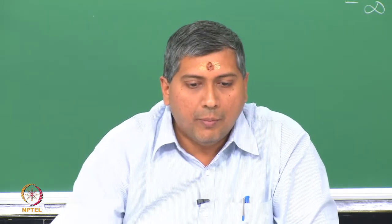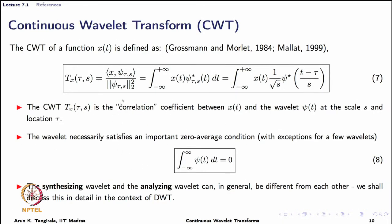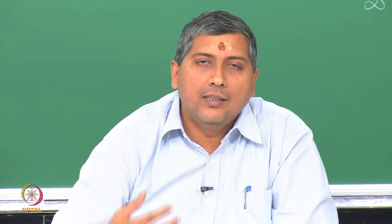To summarize: starting from the Fourier synthesis equation, we have arrived at the synthesis equation for the signal in terms of the wavelet transform T subscript x, which is a function of tau and s. Compare this with the short time Fourier transform which was a function of tau and frequency omega — now it is a function of tau and scaling parameter. Much of what we have done — from Fourier atom to wavelet atom, from Fourier synthesis to the wavelet synthesis equation — is not found in many texts, so it may be somewhat new.